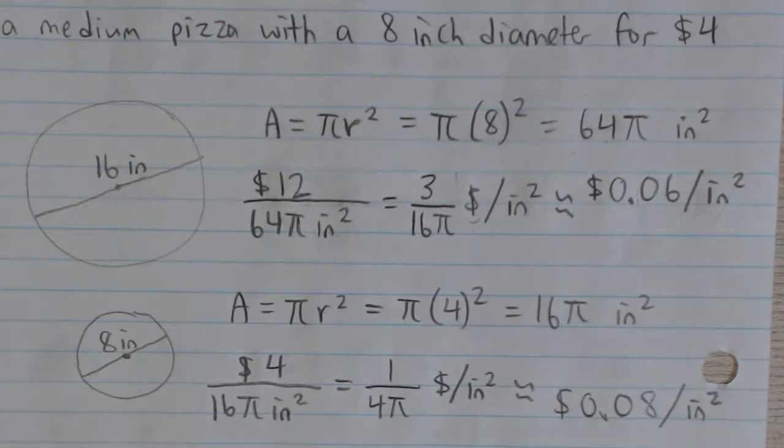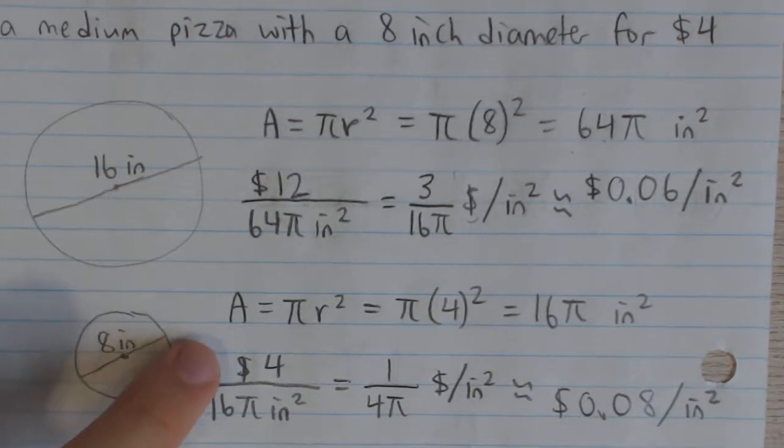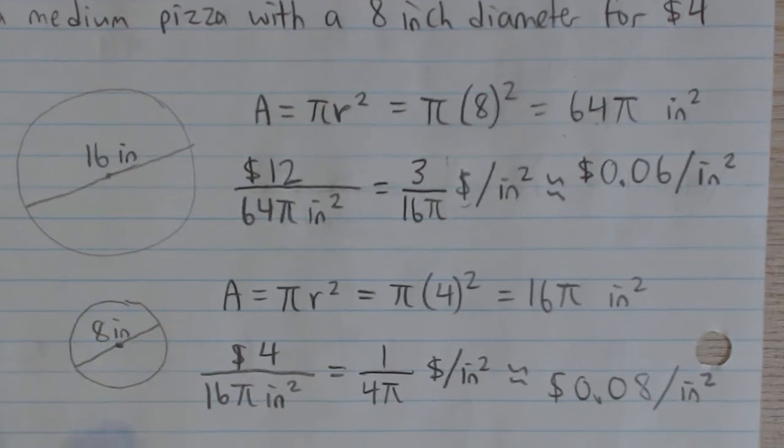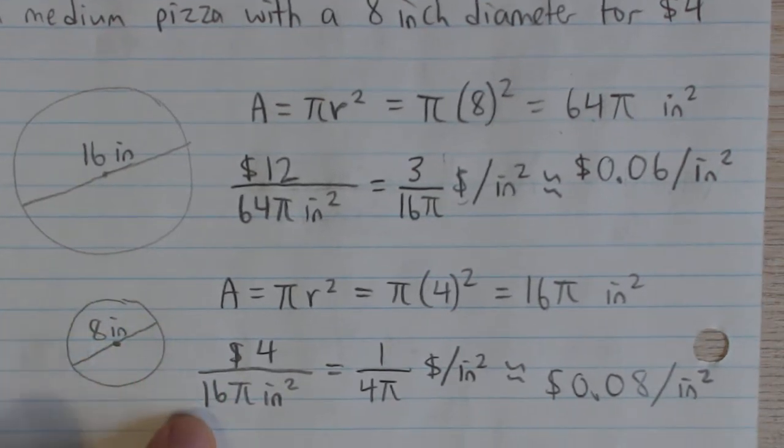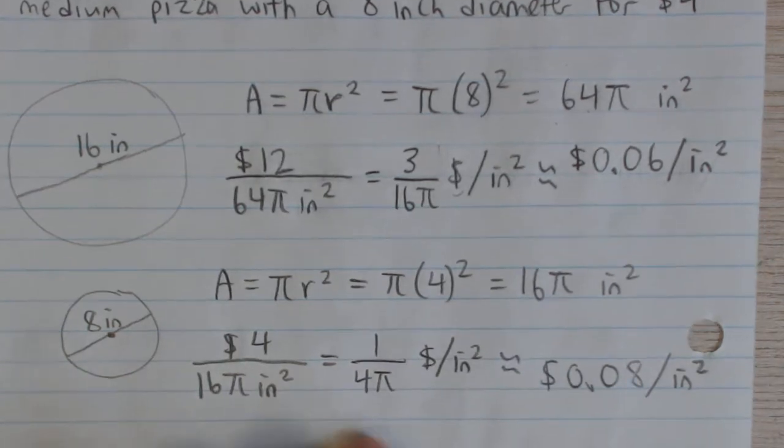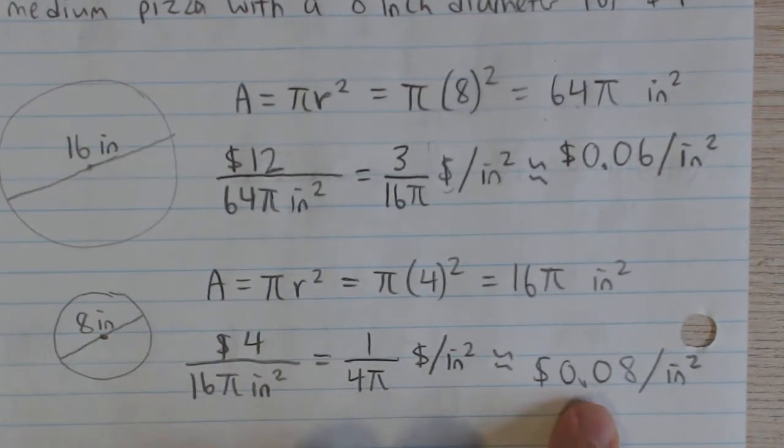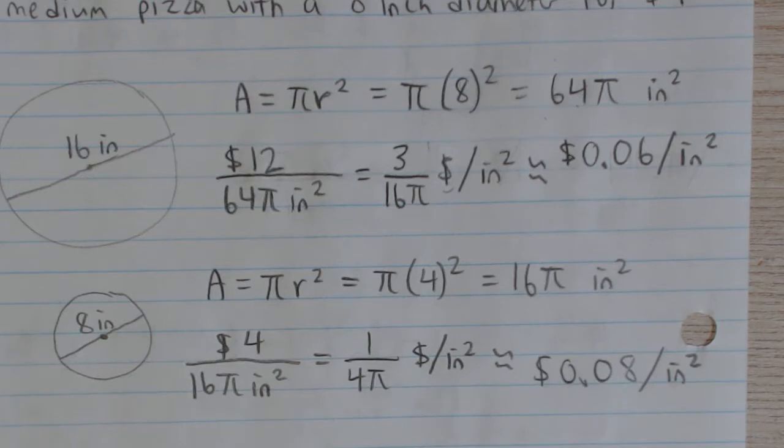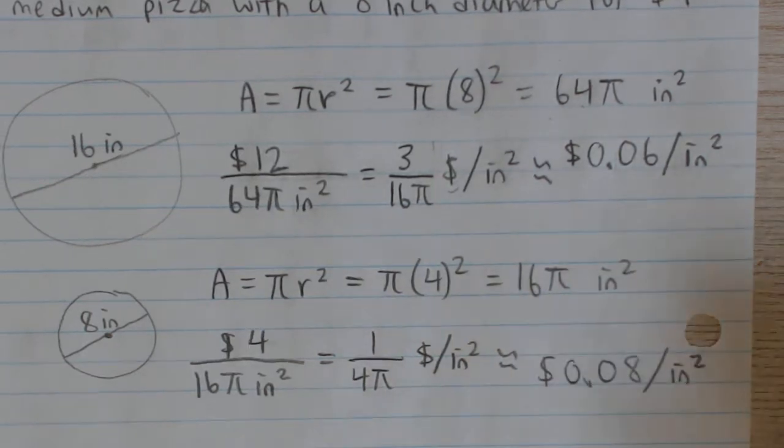If we calculate the unit price, or price per square inch, it's $4 for the medium pizza divided by the area, which is approximately 8 cents per square inch. You can see in this question that the large pizza is a better buy by about 33 percent.